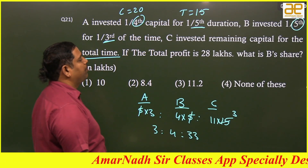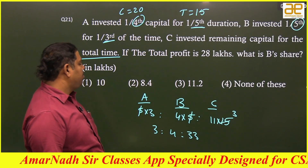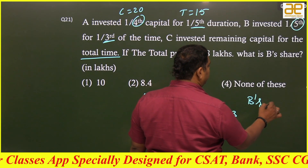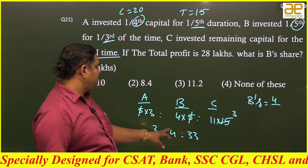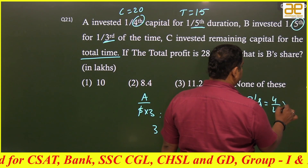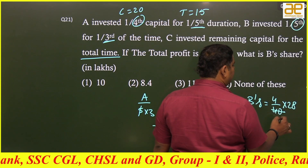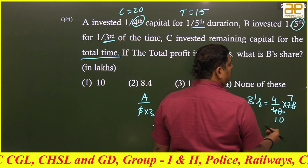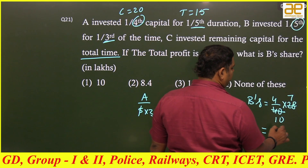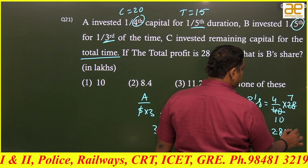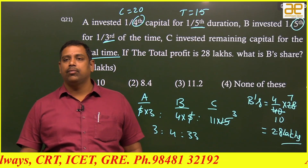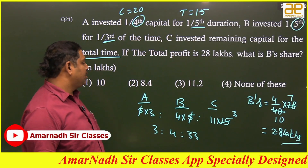They distribute profits in the ratio 3 : 4 : 33. Total profit is 28 lakhs. B's share = 4 out of (3+4+33 = 40) into 28 lakhs. Four tens = 40, four sevens = 28; so (4/40) × 28 = 28/10 = 2.8 lakhs. B's share is 2.8 lakhs.